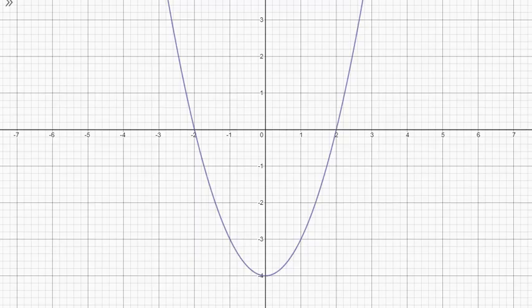So for example, here's the quadratic function y equals x-squared minus 4. So x-squared is positive, which means it opens up. And the negative 4 tells us that the vertex is at 0, negative 4.